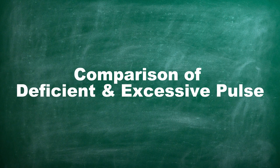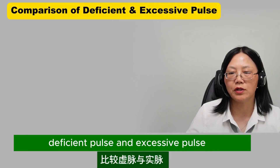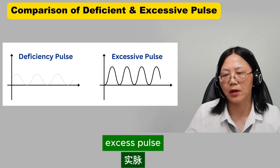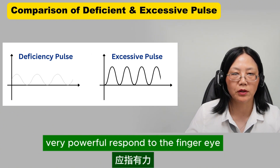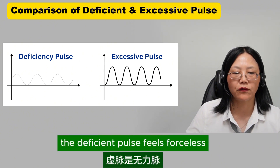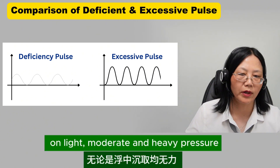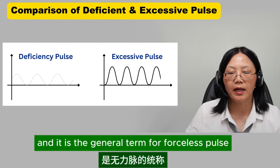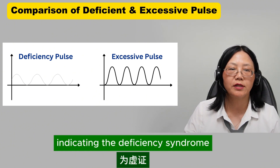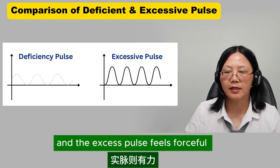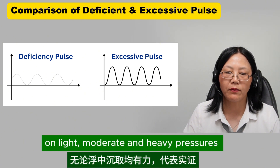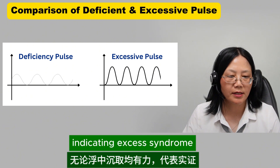Comparing deficient and excessive pulses: they are opposite in pulse strength. The excess pulse is very powerful in response to the finger, but the deficient type is not. The deficient pulse feels forceless on light, moderate, and heavy pressure, and is the general term for forceless pulse, indicating deficiency syndrome. The excess pulse feels forceful on light, moderate, and heavy pressures, indicating excess syndrome.